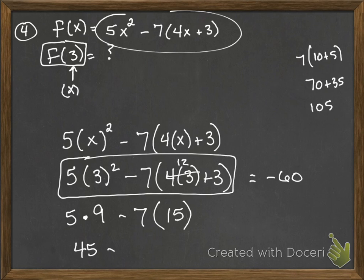So 45 minus 105 gives you negative 60. Okay, so here we have that this is negative 60.